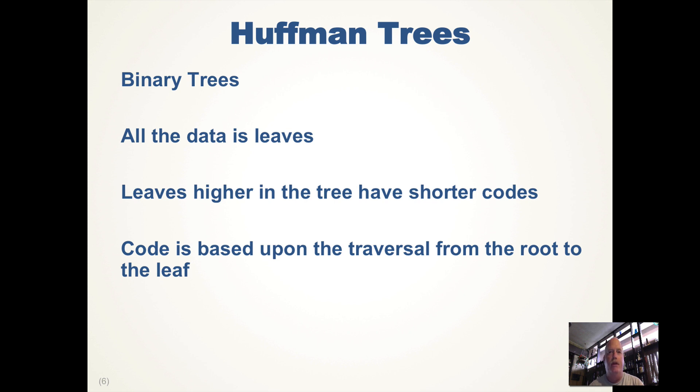The way we construct the Huffman tree is the leaves higher in the tree have a higher frequency. Since they have a higher frequency and a shorter code, we gain compression if we use Huffman codes to store the data.